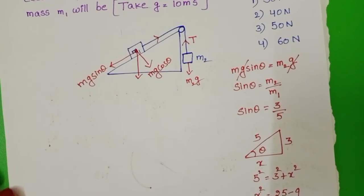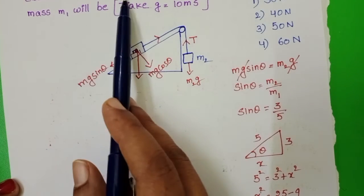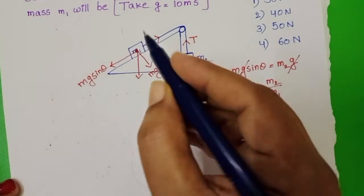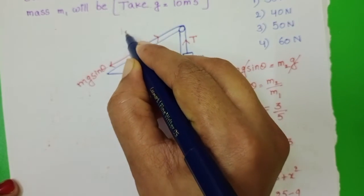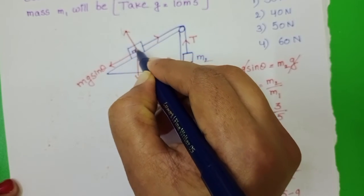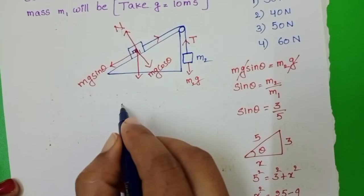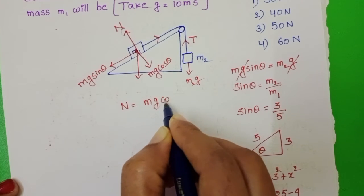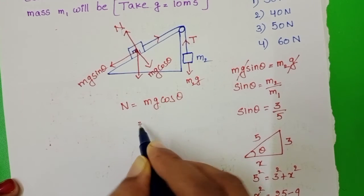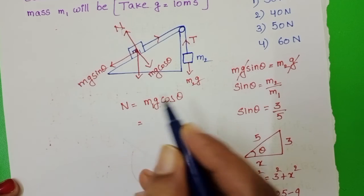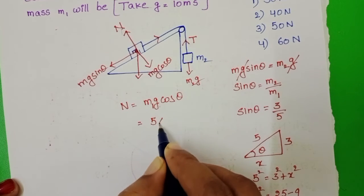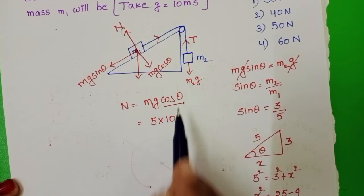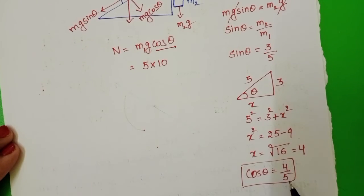Here we have to find out the force exerted by the inclined plane on the body of mass M1. Normal force exerted by the inclined plane on the body of mass M1 is nothing but the normal force. Normal force equals Mg cos theta. Mass of this block 5kg and acceleration due to gravity 10, in place of cos theta take 4 by 5.